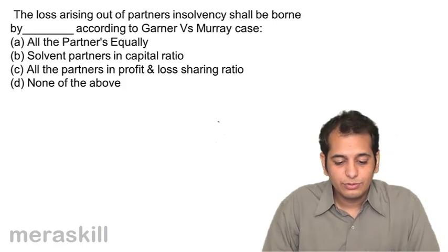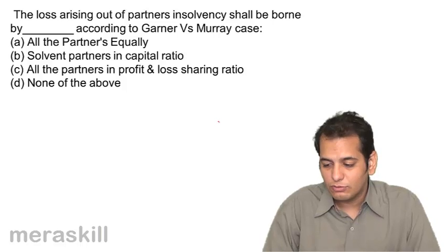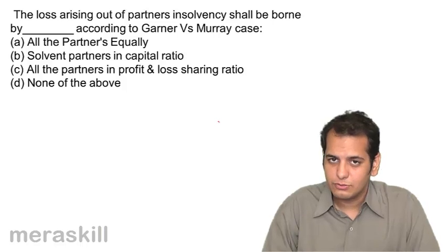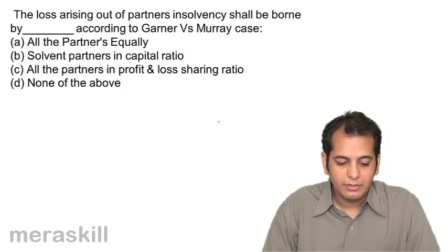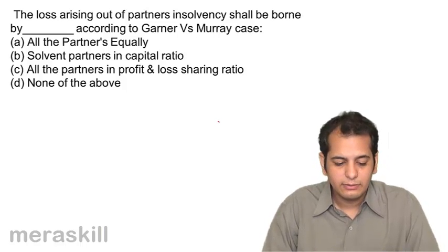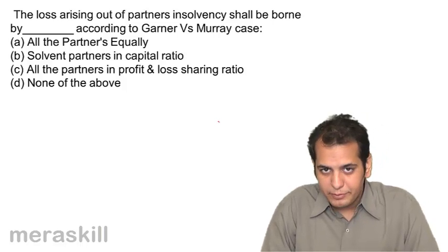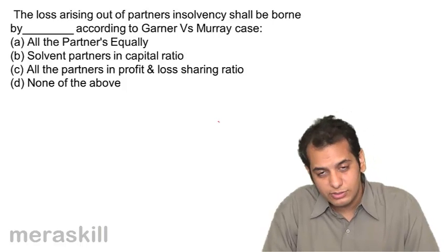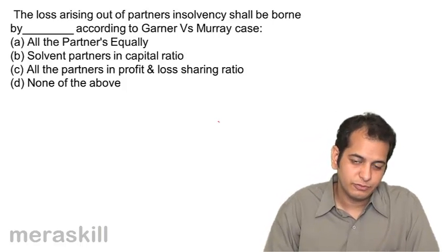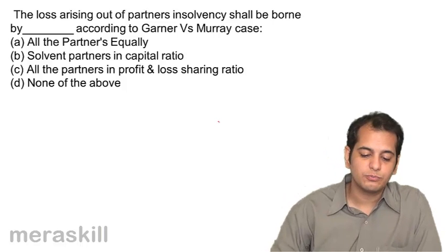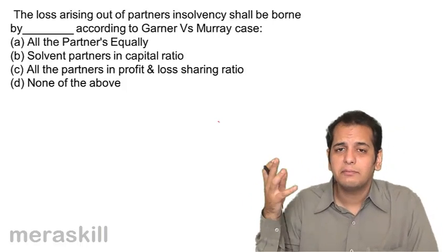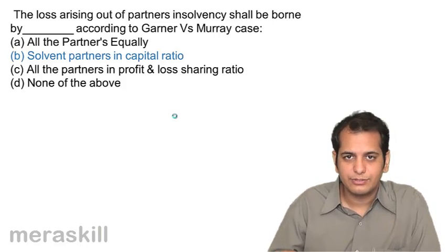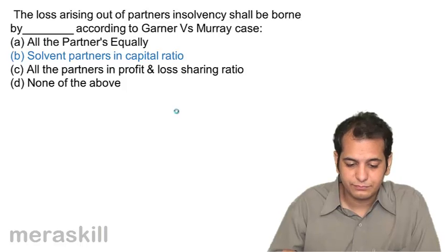Question: The loss arising out of a partner's insolvency shall be borne by the dash, according to the Garner versus Murray case. Options: by all the partners equally; solvent partners in capital ratio; all the partners in profit and loss sharing ratio; none of the above. The answer is: solvent partners in the capital ratio.